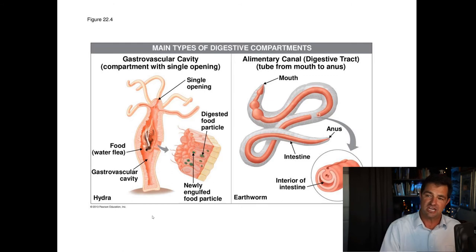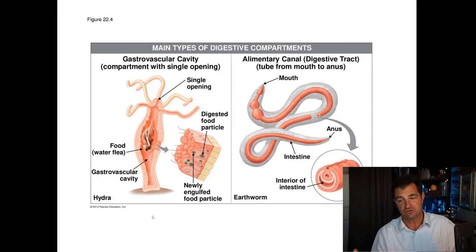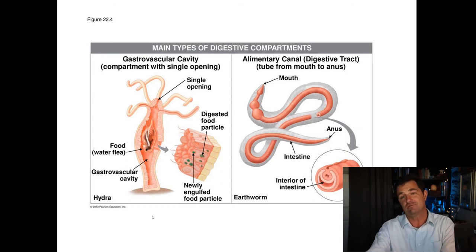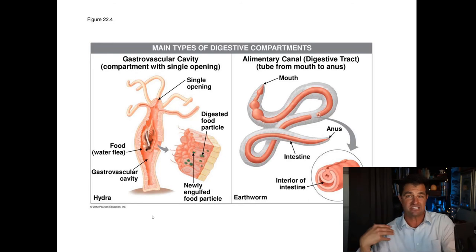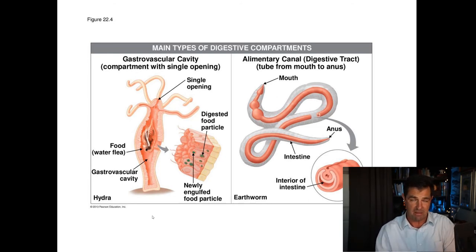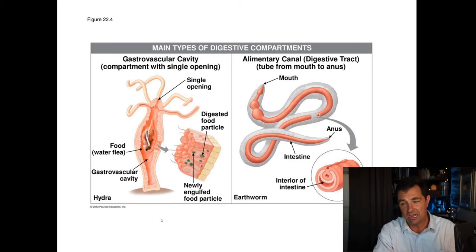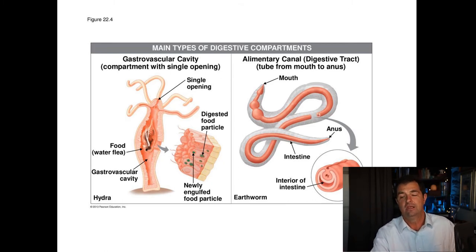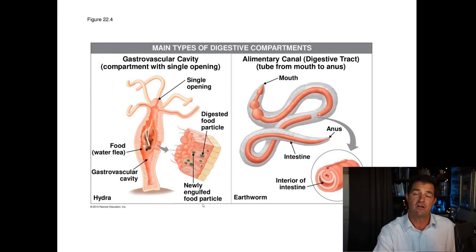The difference between a gastrovascular cavity and an alimentary canal is basically how many openings you have. In things like the Platyhelminthes and cnidarians, they have a gastrovascular cavity where food comes in through the mouth, gets digested, and then waste goes out that same hole. In an alimentary canal, you have a mouth and it passes through a tube, coming out the anus on the other end. An alimentary canal has two openings, and that's important because you can have different parts of the digestive tract specializing in different things.